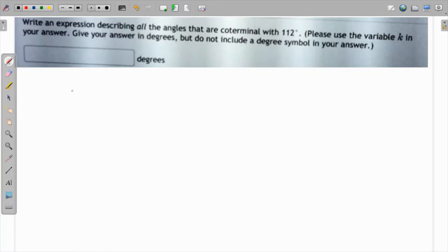In this question we have to write an expression describing all the angles that are coterminal with 112°. What is coterminal? Coterminal means the terminal side of that particular angle should coincide with the given angle. So 112° we know is in quadrant 2.